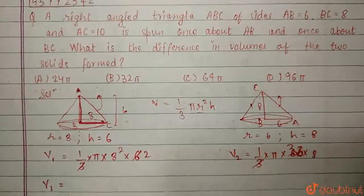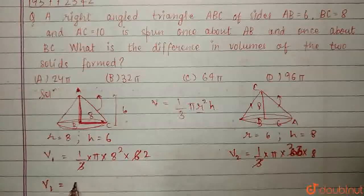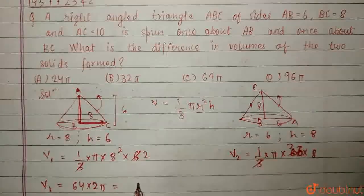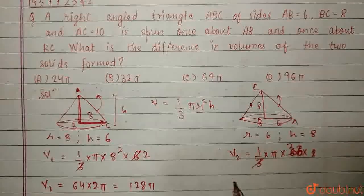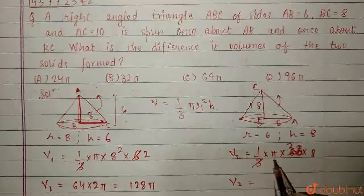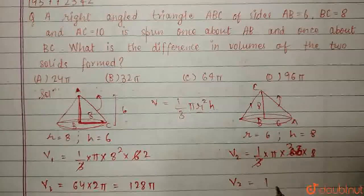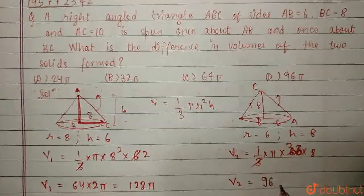I can write v1 equal to 8 square is 64, 64 into 2 pi, that is equal to 128 pi. For v2, I can write 2, 6 are 12, 12 into 8 is 96 pi.